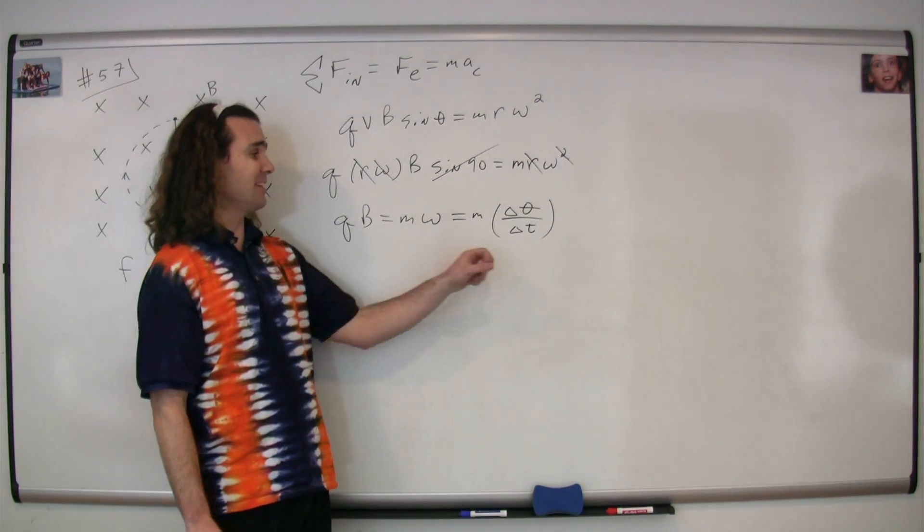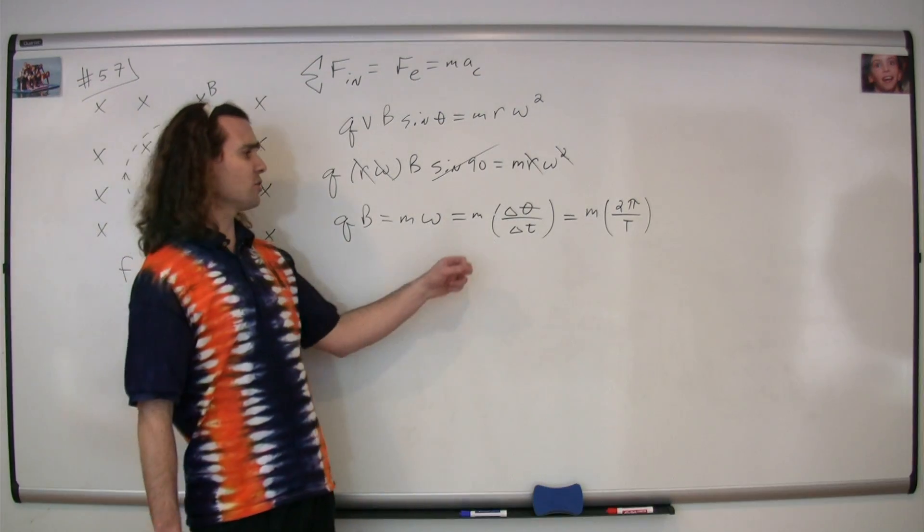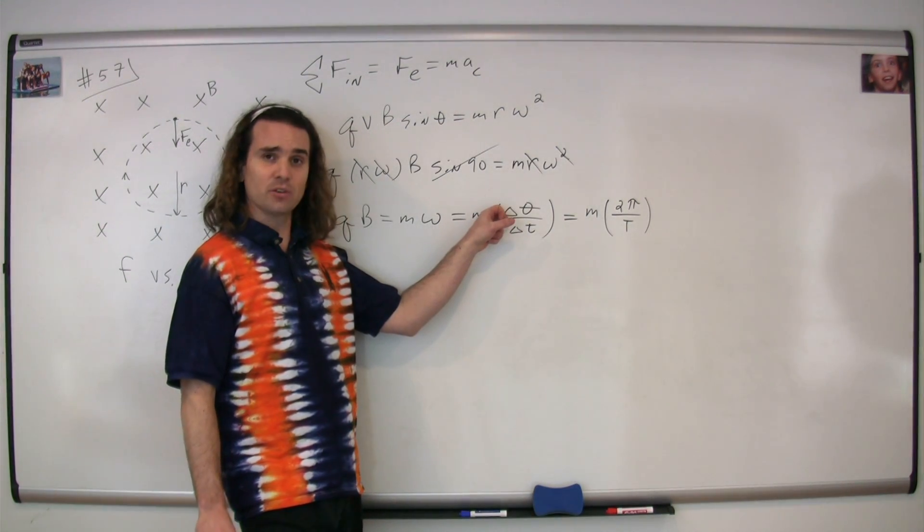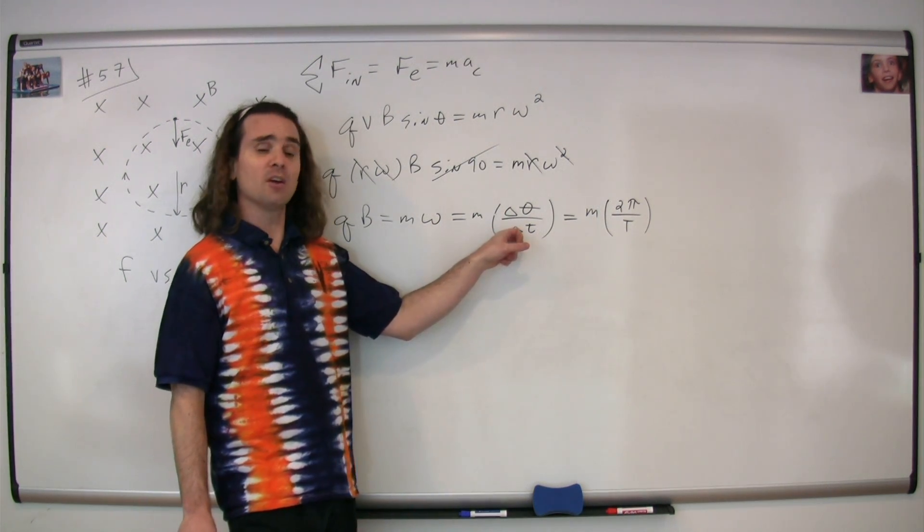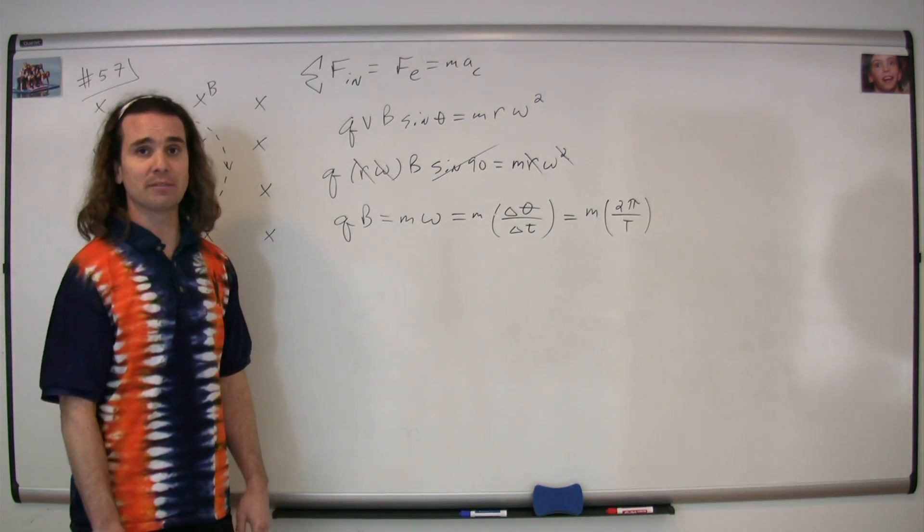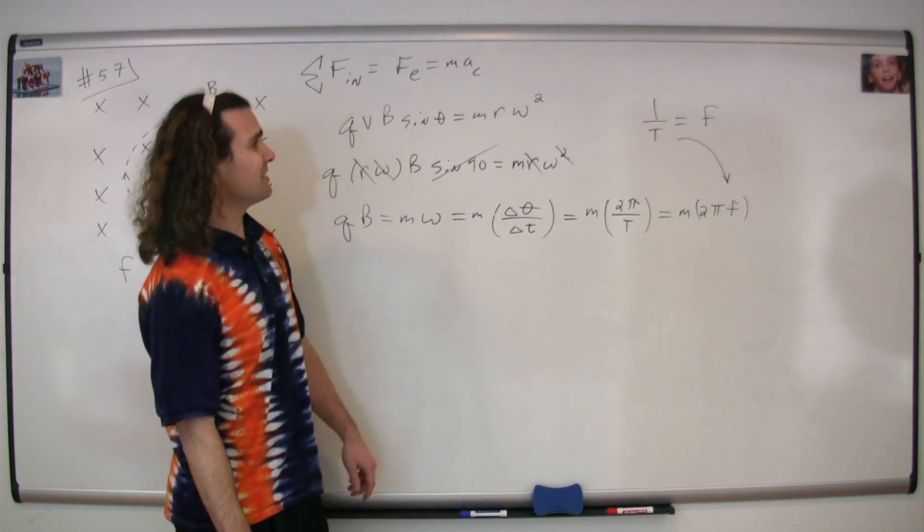The equation for angular velocity is angular displacement over change in time. If the particle goes around once, then the change in theta, the angular displacement of the particle, is two pi radians, and the change in time for the particle then would be the period, or the time for one full revolution.